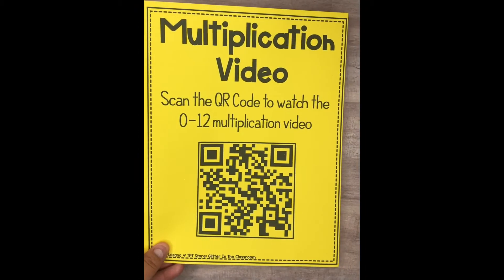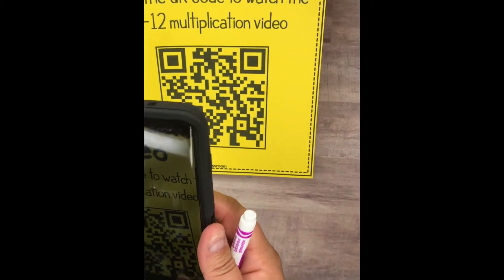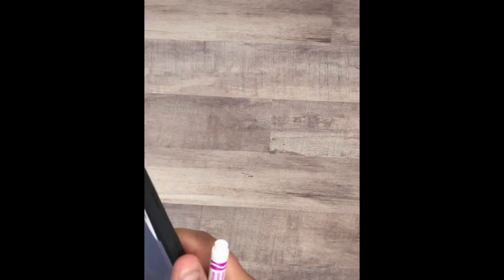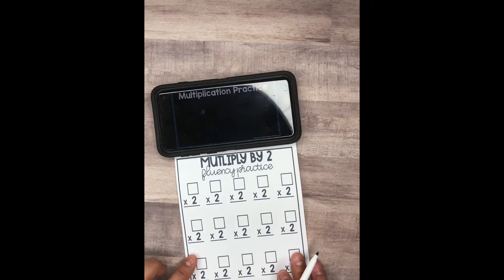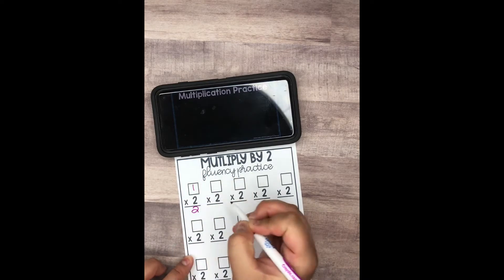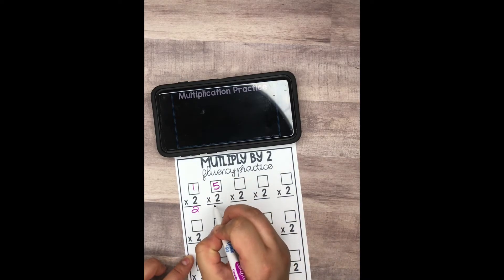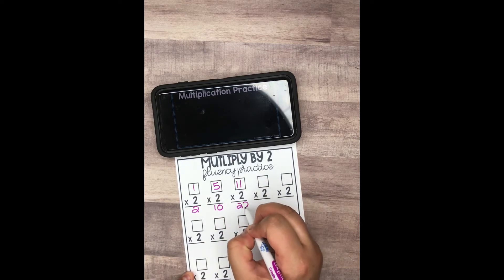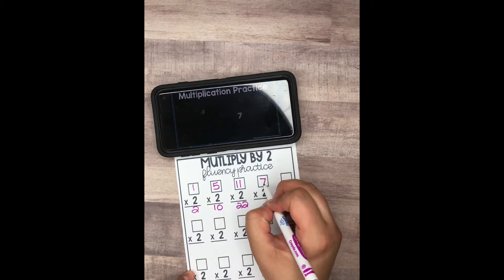For example, if your student is practicing multiplying by 2, they will scan the QR code and watch the multiplication video. The student will see a number on the screen, write it down, multiply, and then write down their answer. They continue multiplying until they have finished all their facts. Students can pause the video as they need to and play when they are ready.